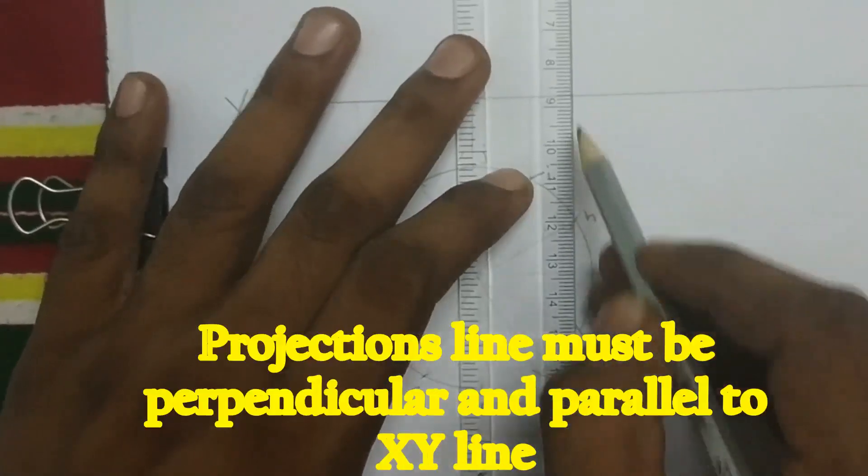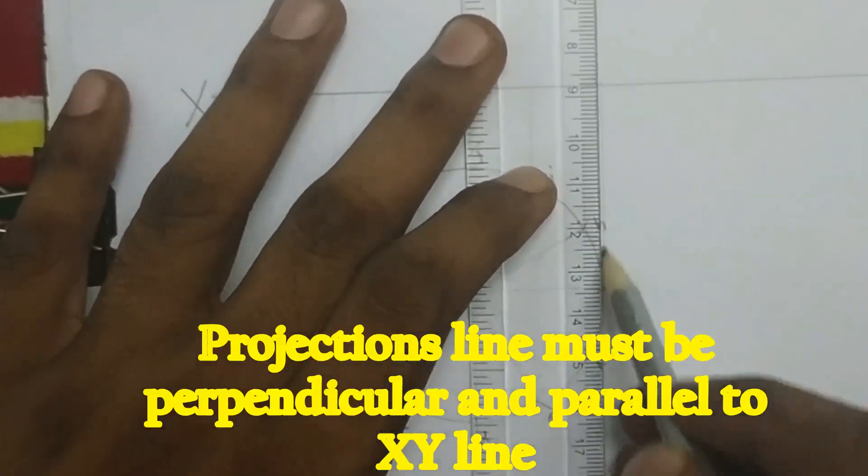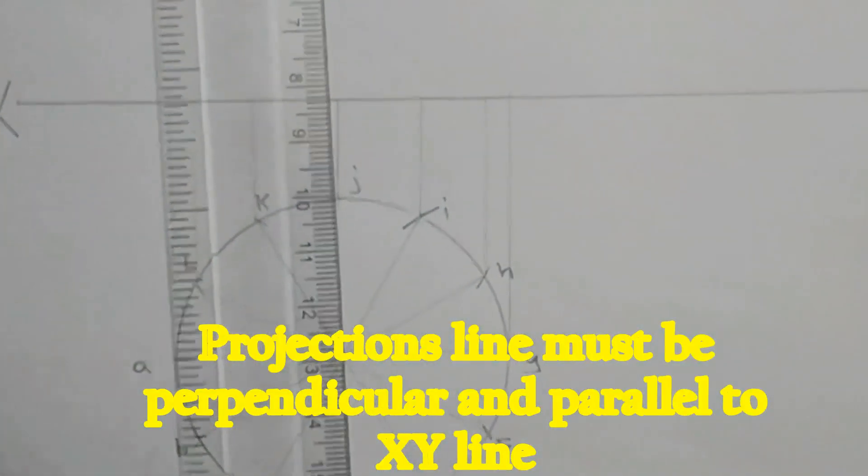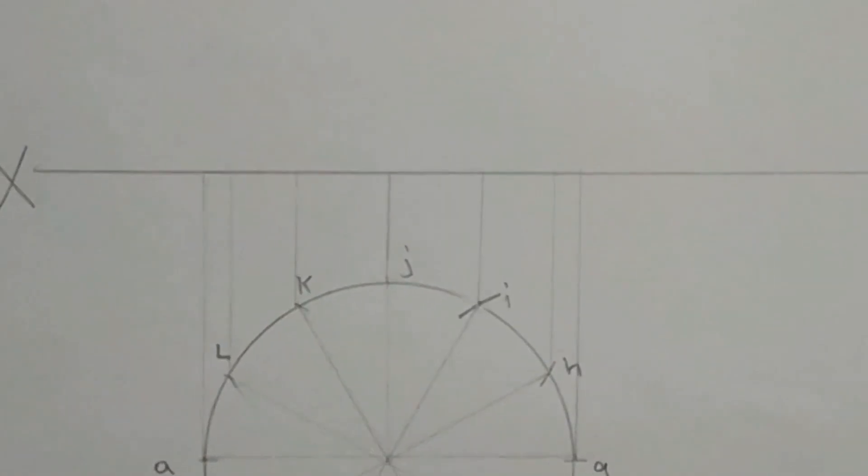If the projection lines are inclined, we can't be able to get a perfect diagram. So keep in mind we have to draw parallel and perpendicular projection lines.